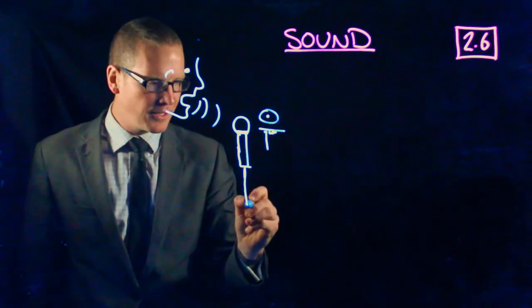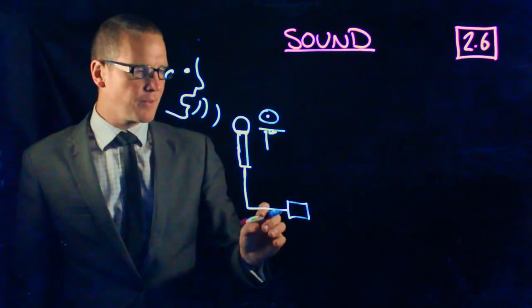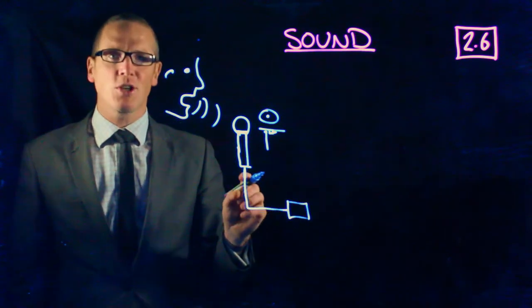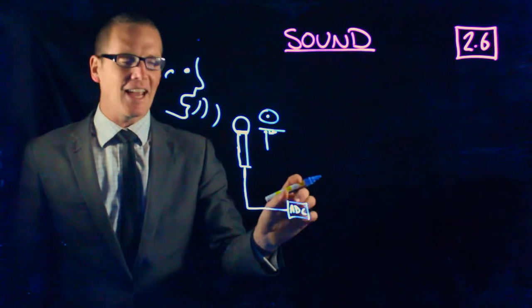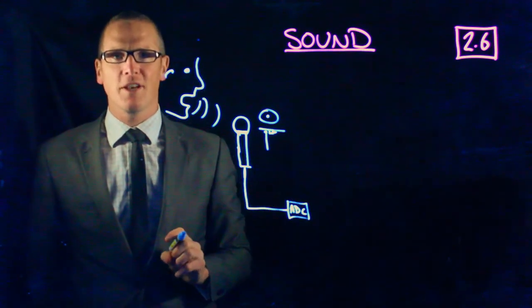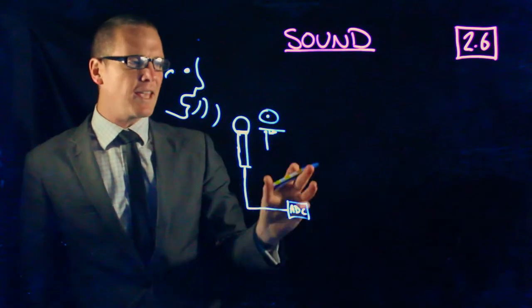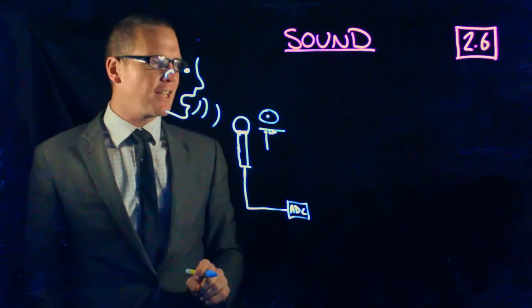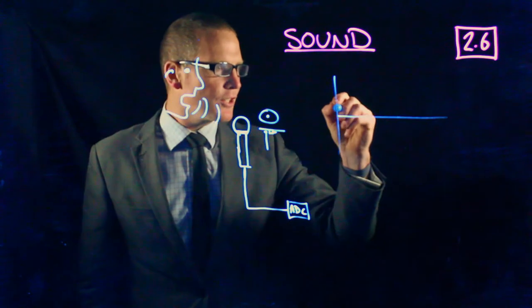The computer at this stage has a piece of hardware called an ADC, an analog to digital converter. The ADC takes that analog signal, that wave, and measures it at regular intervals. You've got a sound wave...